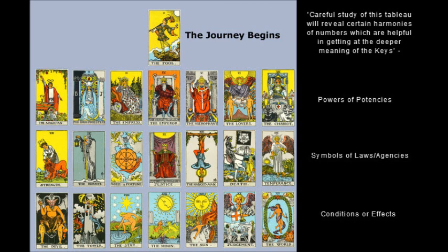Here is how the 22 major arcana cards look laid out. There's a quote by Paul Foster Case that says: 'Careful study of this tableau will reveal certain harmonies of numbers which will be helpful in getting the deeper meaning of the keys.' I have the cards laid out with the Fool's Journey on top, going from 1 through 7 in the first row, 8 through 14 in the second, and 15 through 21 in the third — with the Fool making 22.